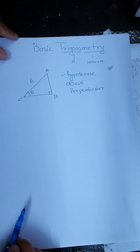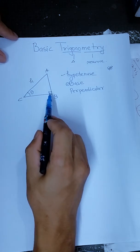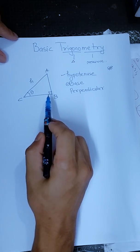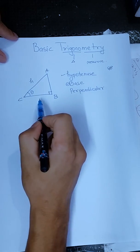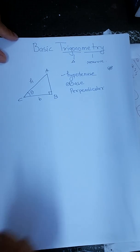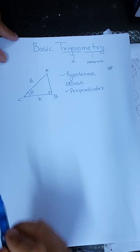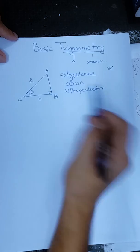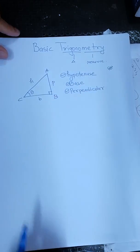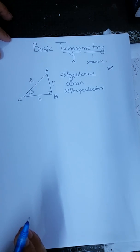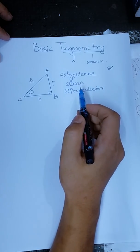Right-angle triangle — 90 degrees. So perpendicular to the left, perpendicular to the left hand. The angle is ninety degrees.